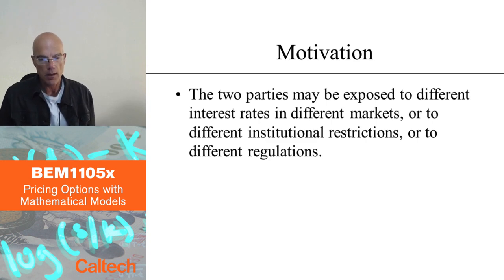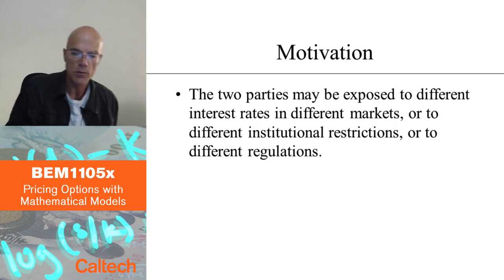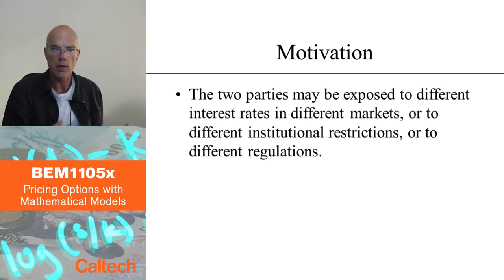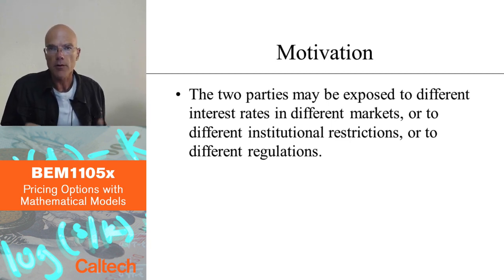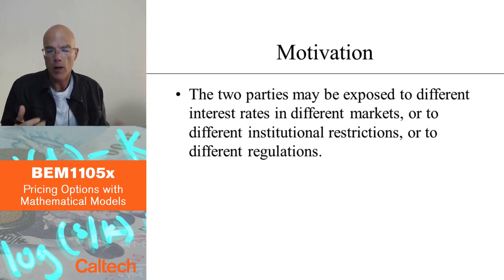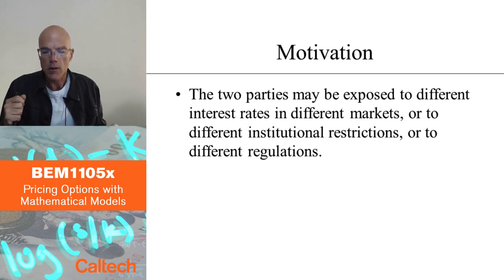There are possible explanations — imperfections in the market in particular. For example, the two parties may be exposed to different interest rates when they take a loan in different markets, or they may be under different restrictions and regulations, where one party can do things the other cannot, making it beneficial to enter a swap.